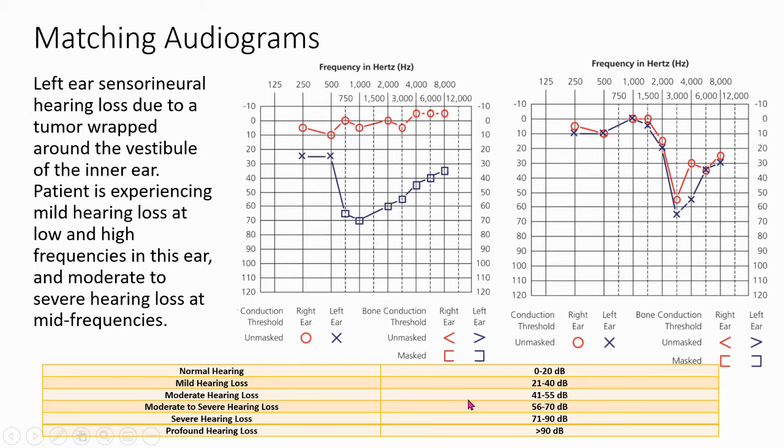And again, I've got a chart that shows me the range of different hearing loss levels that I'm going to need to consult. And here's my patient's description. It says left sensory neural hearing loss due to a tumor wrapped around the vestibule of the inner ear.